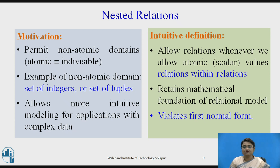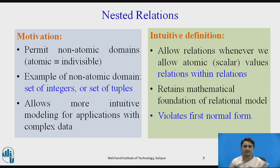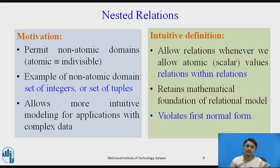The intuitive definition: a nested relation allows relations within relations — whenever we allow atomic or scalar values, there can be one relation inside another. This is how we define inheritance and relations here. Even while doing this, it retains the mathematical foundation of the relational model. However, it violates the first normal form (1NF).